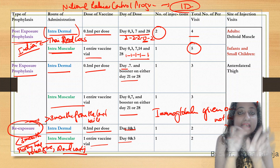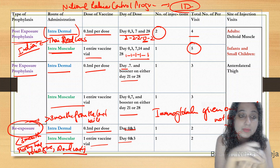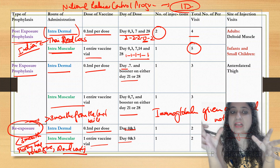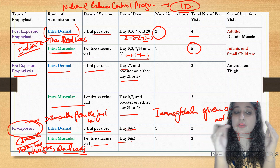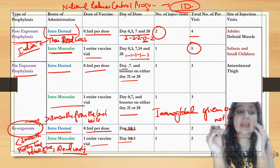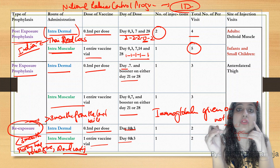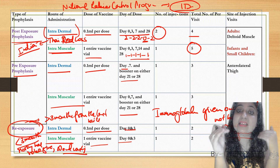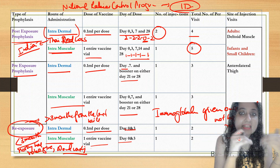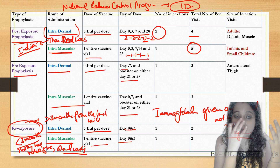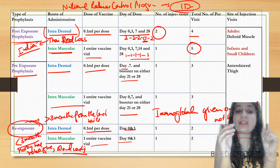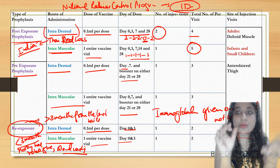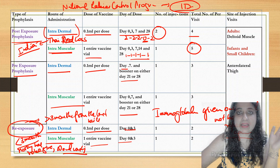If re-exposure occurs less than three months from the last bite, nothing needs to be given — only wound washing is done. So the cutoff is three months: more than three months, give vaccine on days 0 and 3; less than three months, wound washing only.